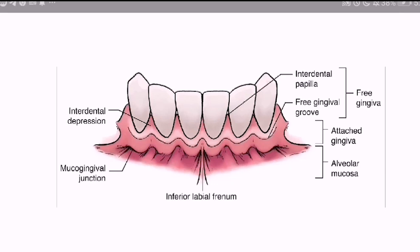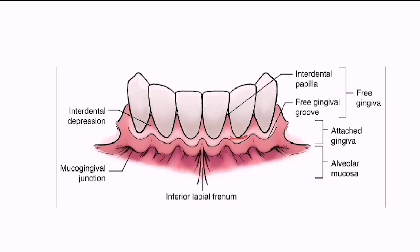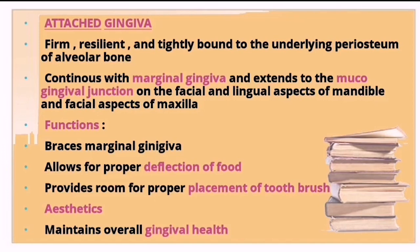Apically, the marginal gingiva is demarcated from the attached gingiva by a shallow depression called the free gingival groove. In this picture, the marginal gingiva extends coronally around 1.5 to 2 mm onto the CEJ, and is separated from the attached gingiva by the free gingival groove, surrounding the gingival sulcus in a collar-like fashion.